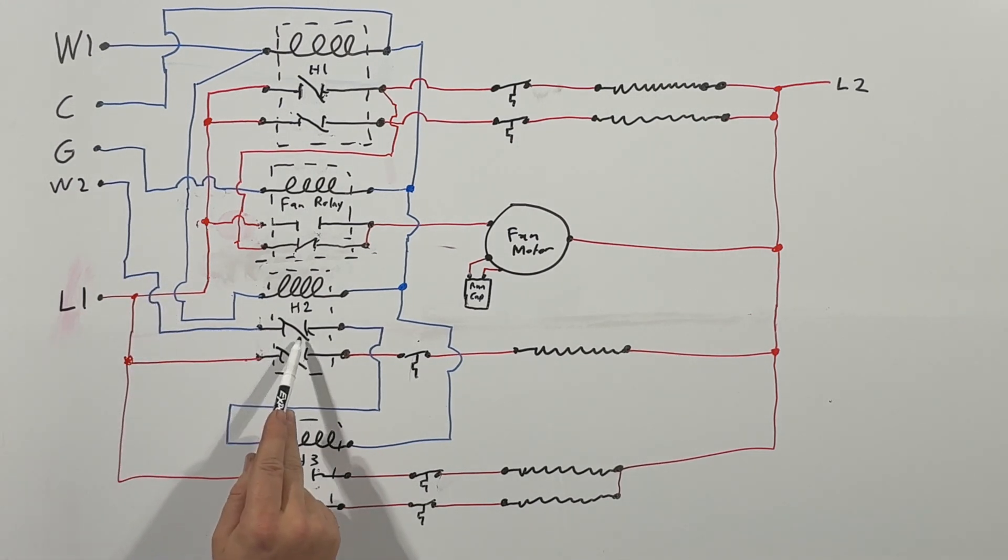Now if we call for W2, we put 24 volts and it'll travel if this is energized. It'll go through it and continue down, energize this sequencer down here, which will close these two relays and energize these heating elements over here.